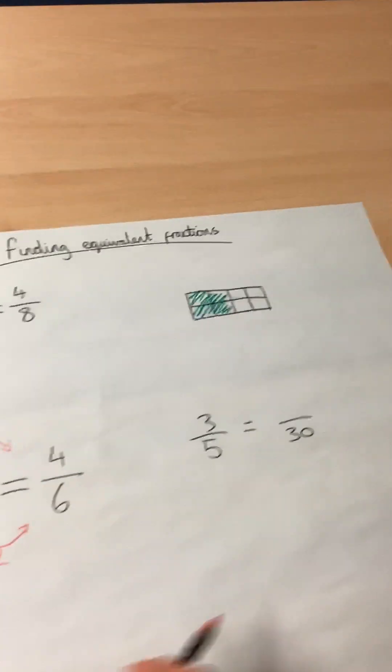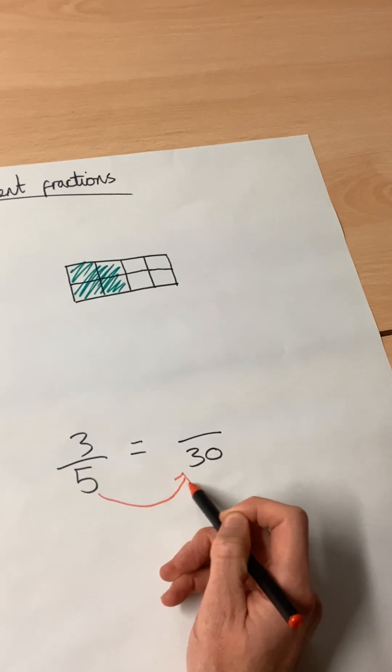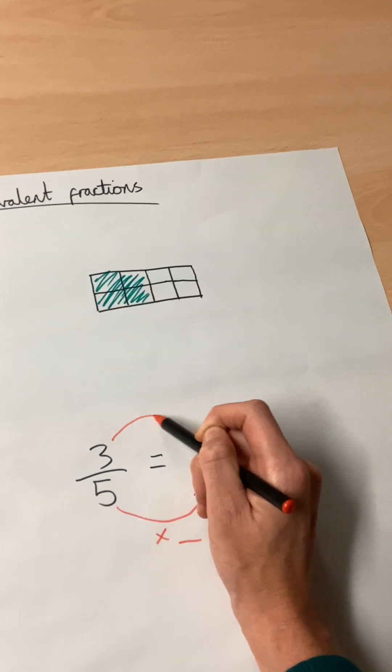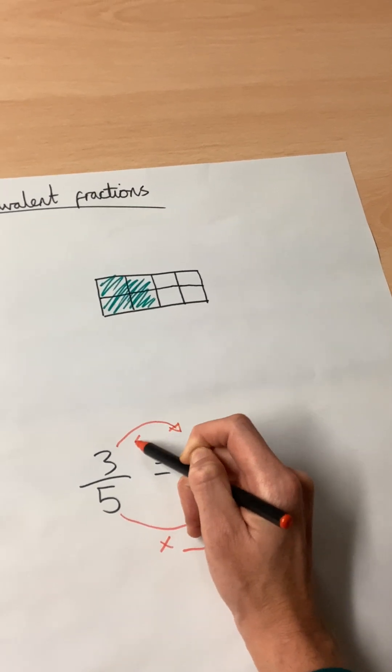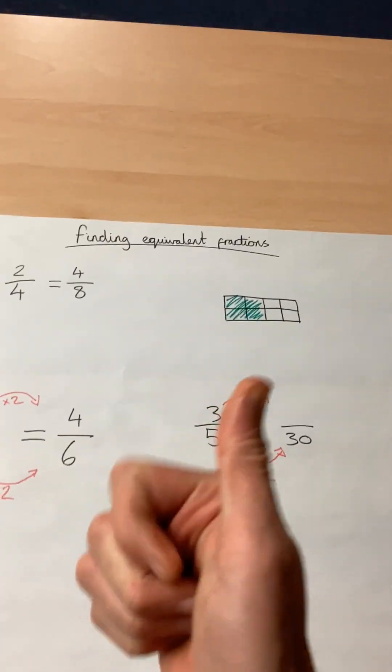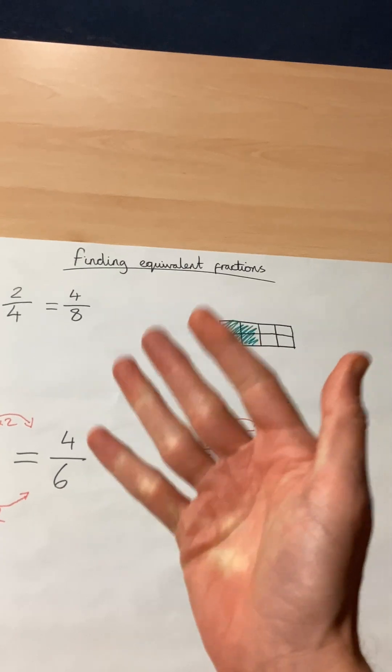What have I timesed by on the bottom? And then I will do the exact same on the top. Count up in my five times table. Five, ten, fifteen, twenty, twenty-five, thirty.